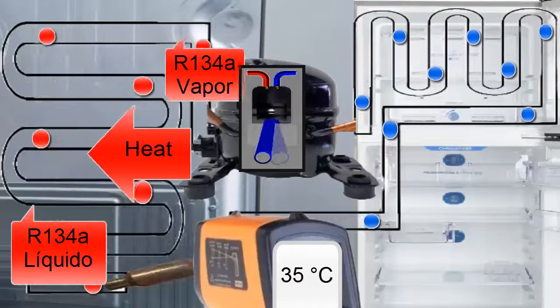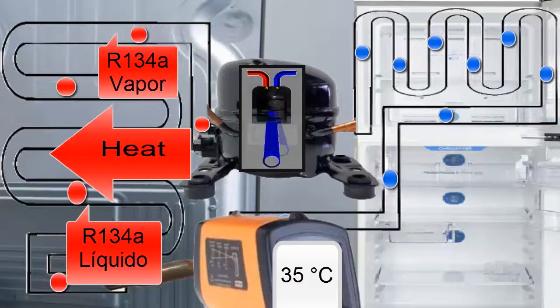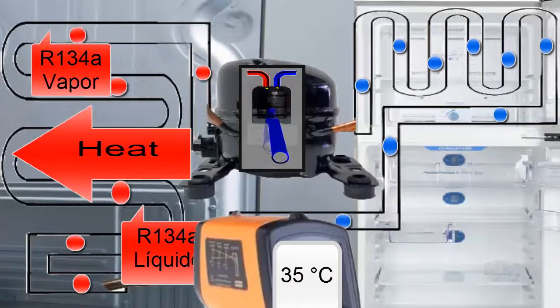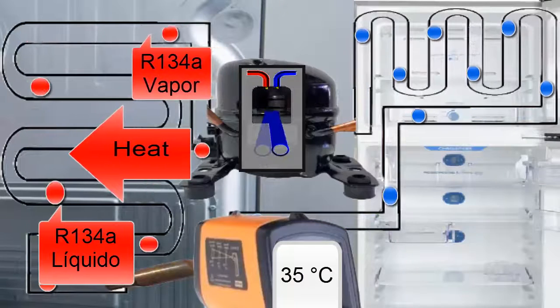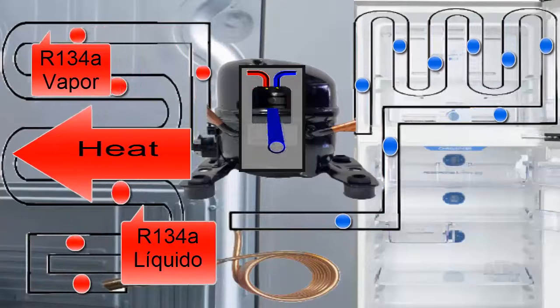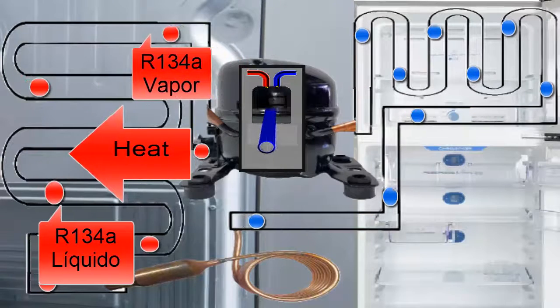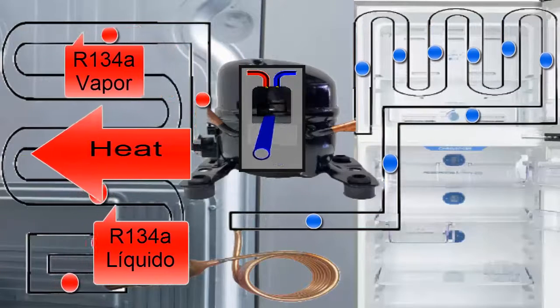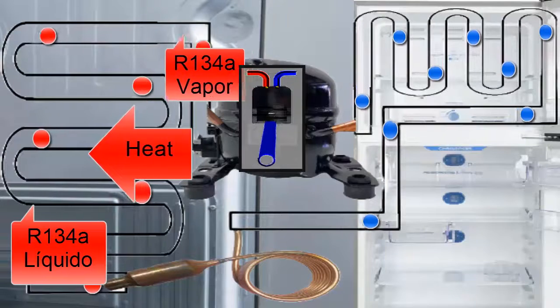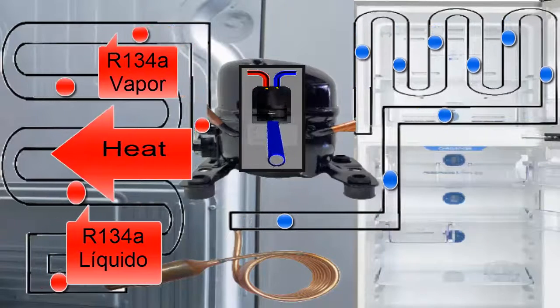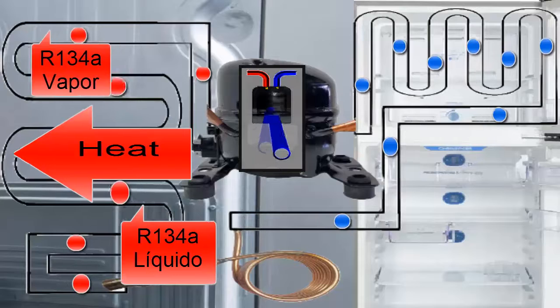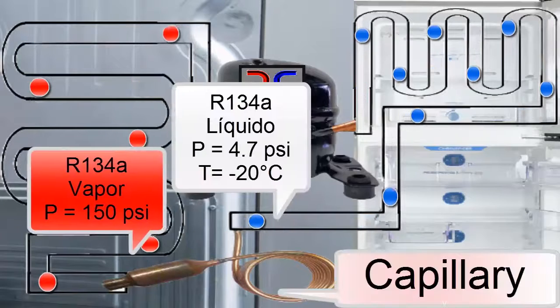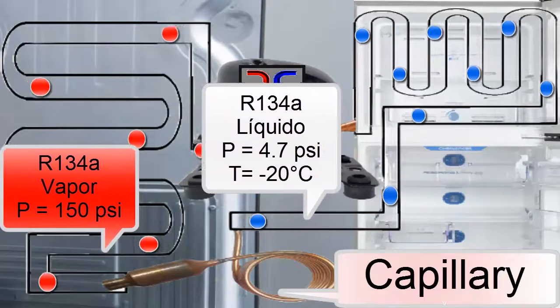The R134A, now in a liquid state and at a temperature close to the ambient, exits the condenser and heads to the capillary tube to restart the cycle. In the capillary, the pressure and temperature of the refrigerant decrease significantly, so it returns to the initial pressure of 4.7 pounds per square inch and minus 20 degrees Celsius, restarting the refrigeration cycle.